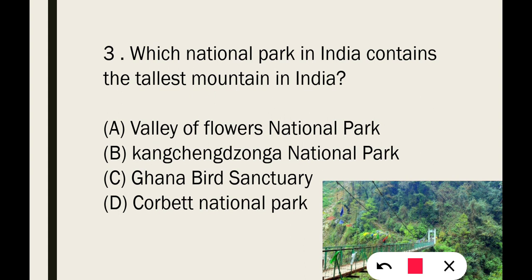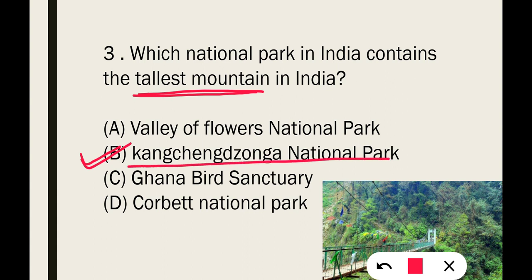Next: Which national park in India contains the tallest mountain? The correct answer is Kangchenjunga National Park in Sikkim.